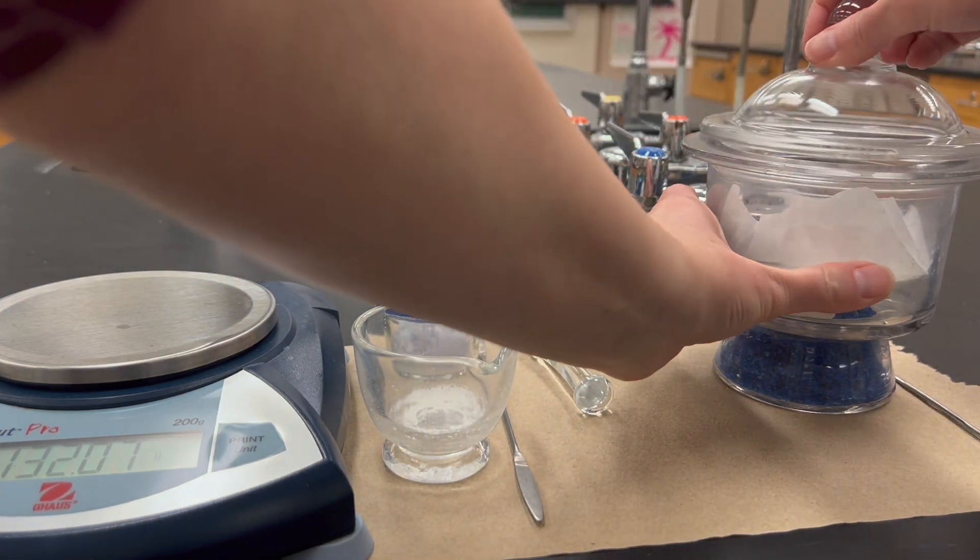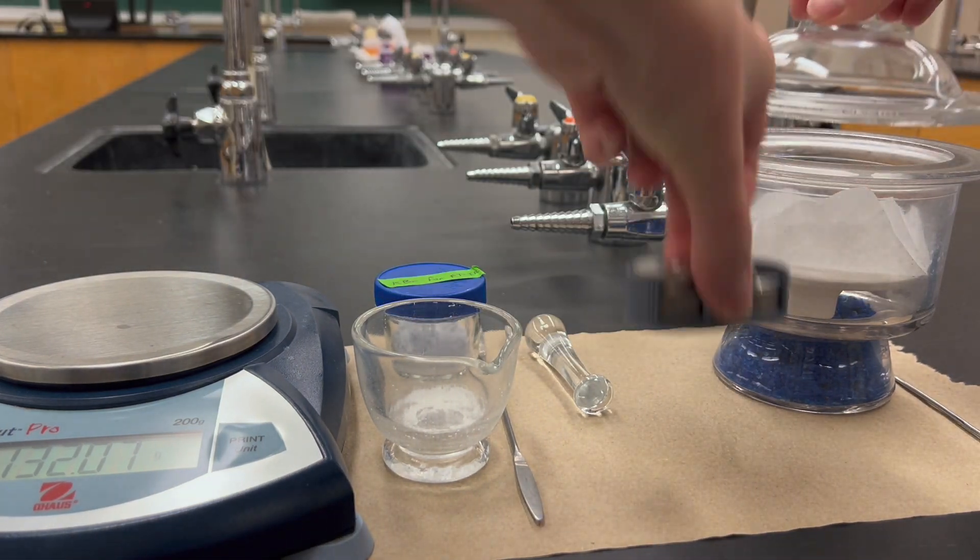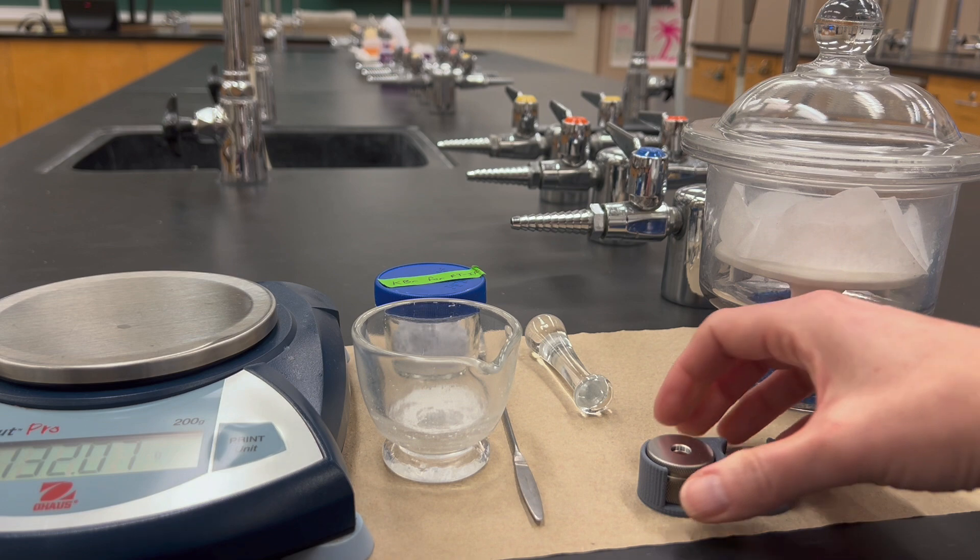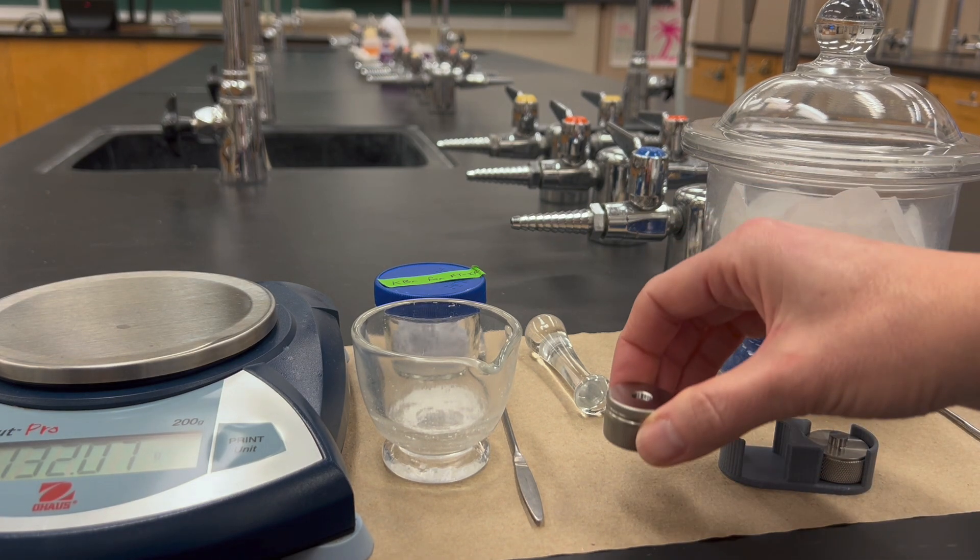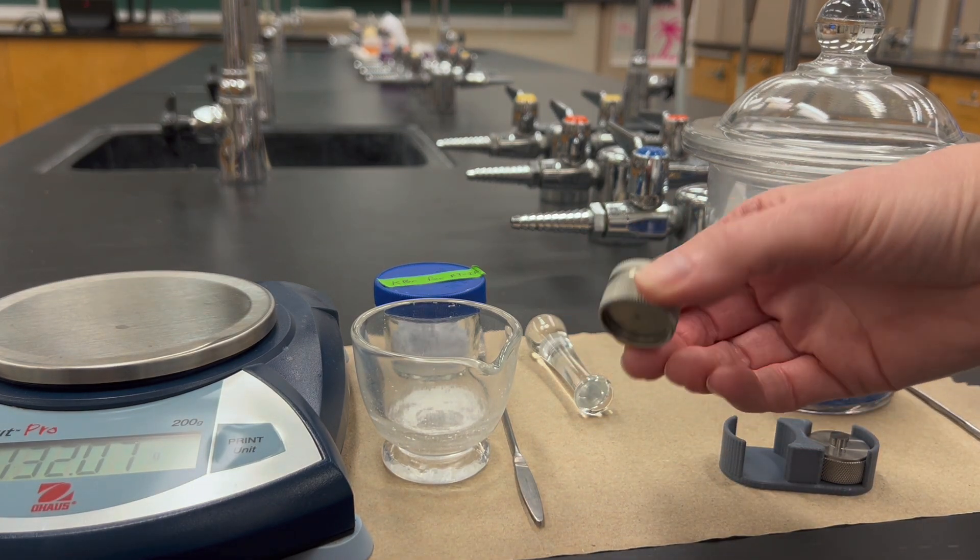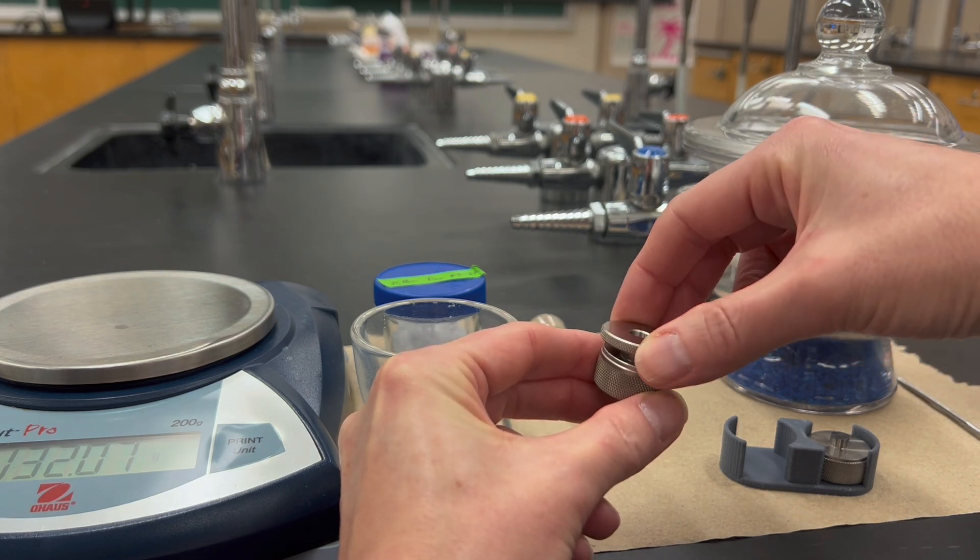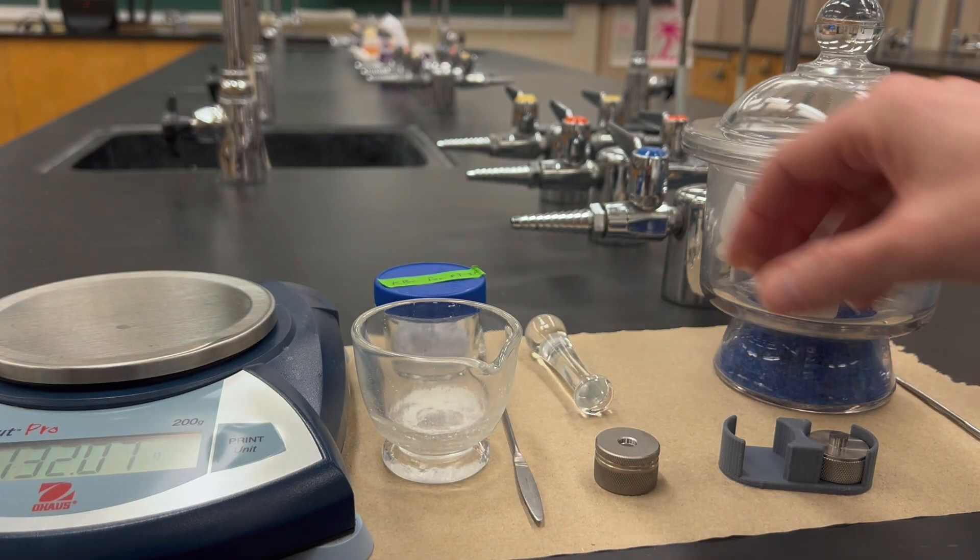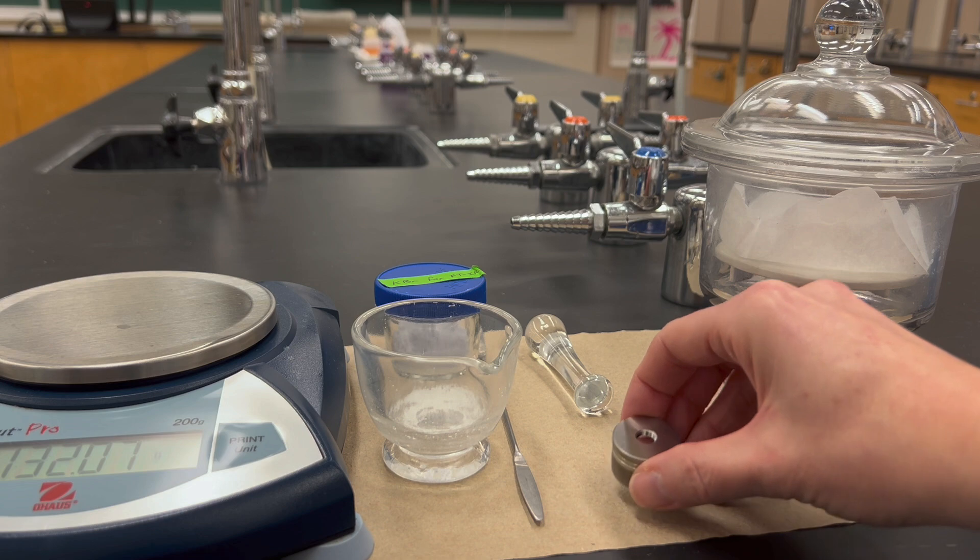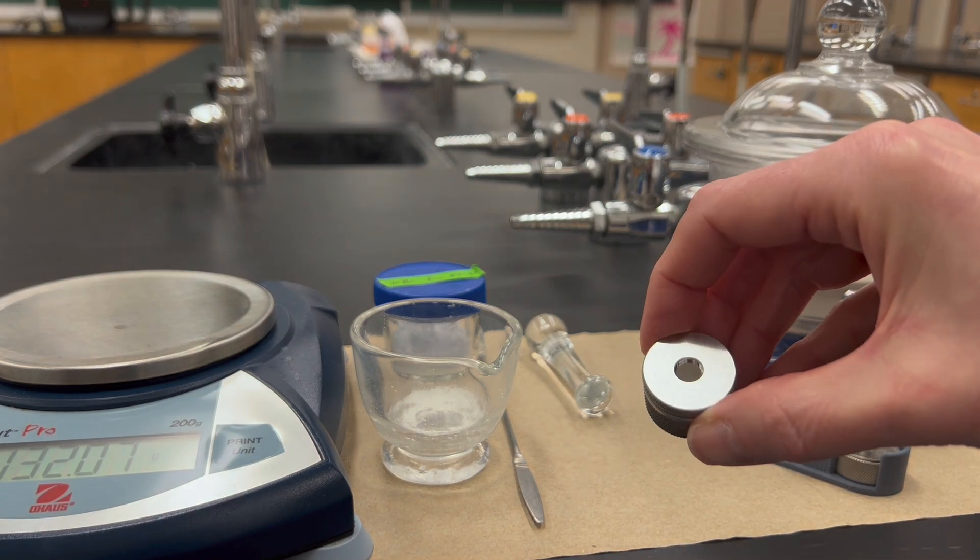Next, we have these little—they're called anvils—things that will hold the sample, and we keep those in the desiccator as well. You want to first take the part that has these two pieces, and it actually has a little indent in the bottom; that's where the sample is going to go into that little hole.